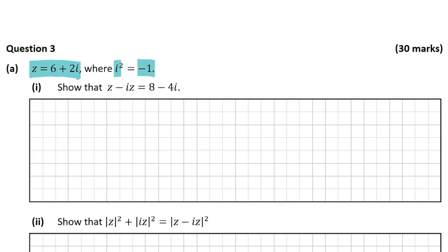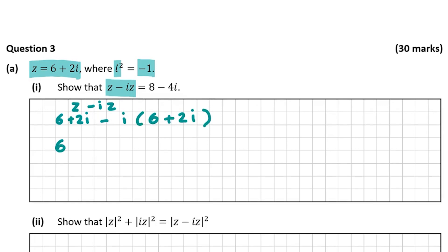Part 1 asks us to show that z minus iz is equal to 8 minus 4i. So let's write this out. We know z is 6 plus 2i, so we write z minus iz as: 6 plus 2i, minus i multiplied by z, which is 6 plus 2i. Multiplying minus i through: minus i multiplied by 6 gives minus 6i.